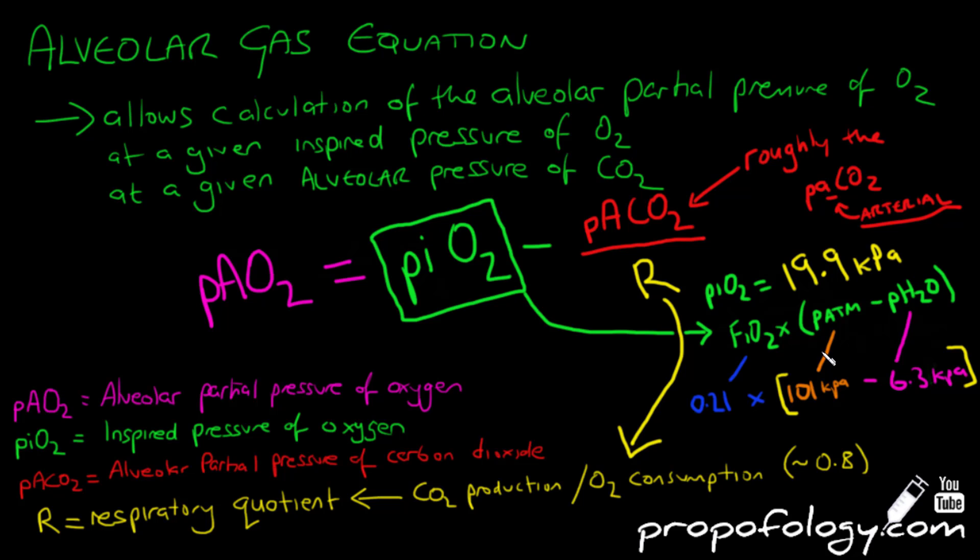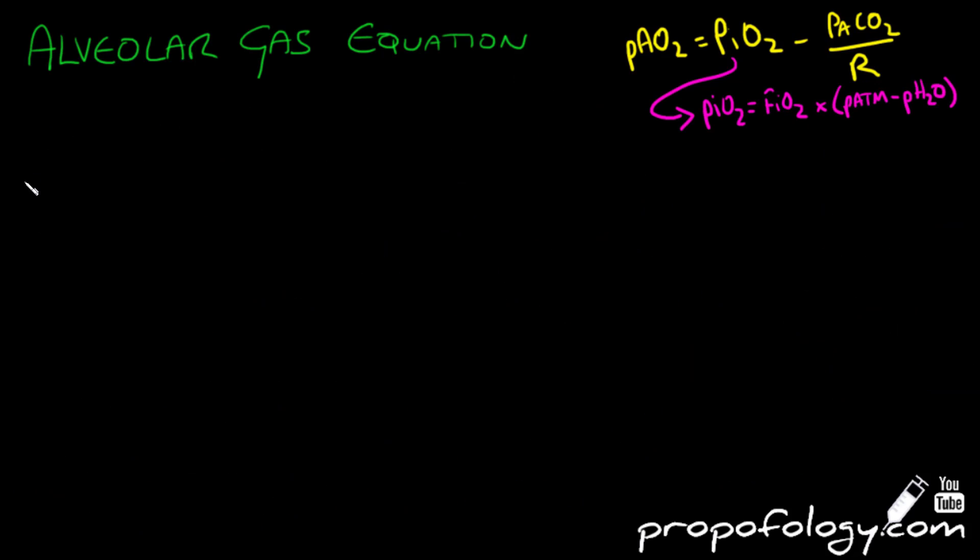Given that we've talked about the partial pressure of water remaining the same no matter what altitude you're at, let's look at altitude in a bit more focus. So at an altitude of 63,000 feet, that's equivalent to an atmospheric pressure or barometric pressure of 6.3 kPa or 47 millimeters of mercury.